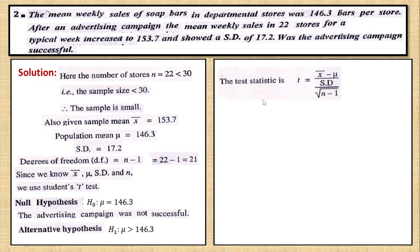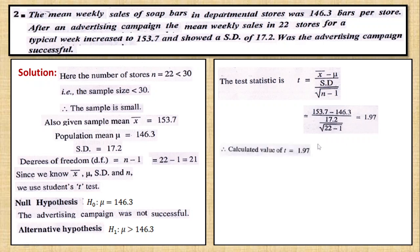The test statistic uses the t-test formula. Applying the formula with the given values, the calculated t-value is 1.97. If the value is positive, we keep it as positive. So the calculated value T is equal to 1.97.